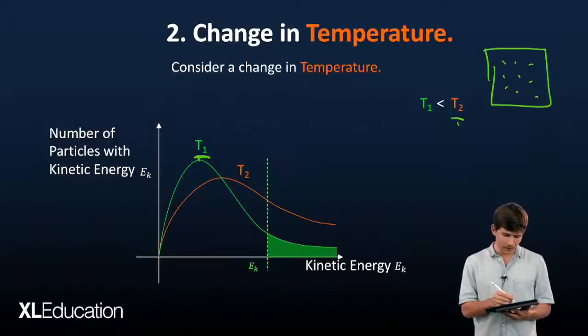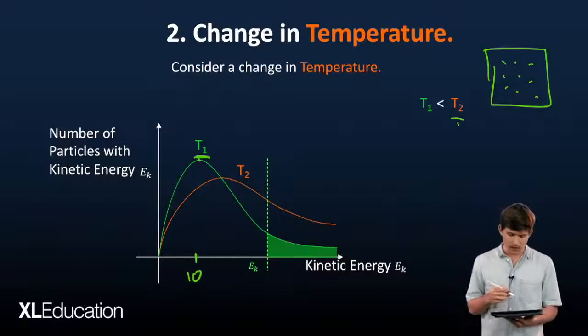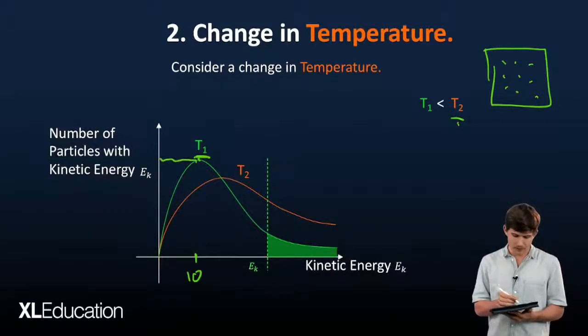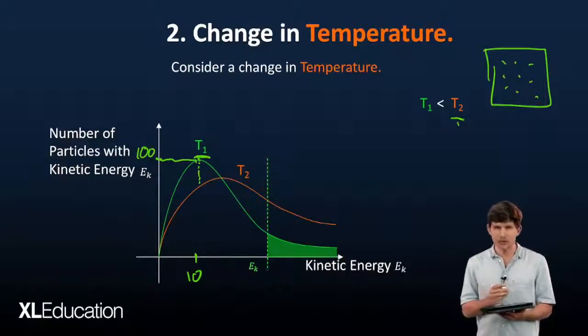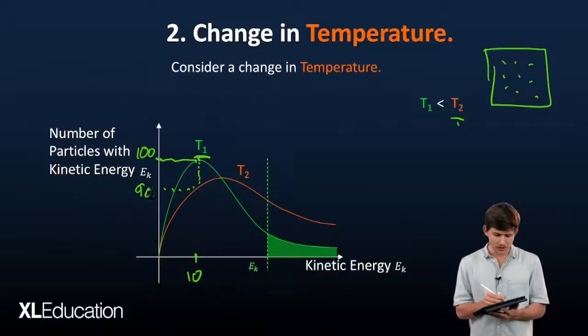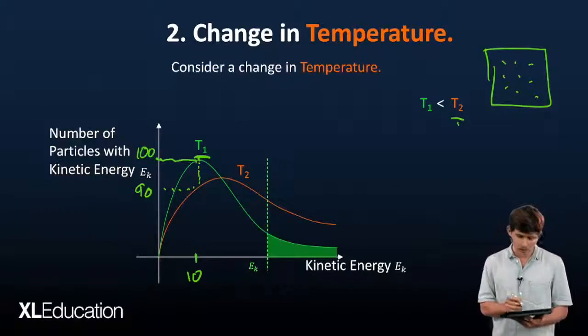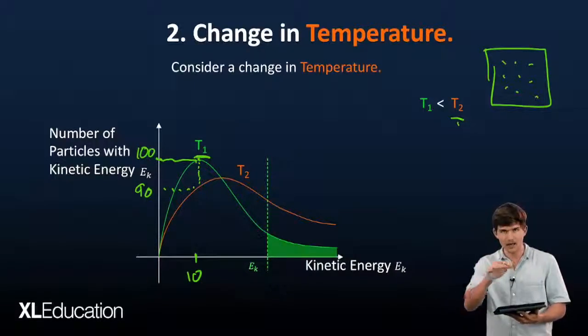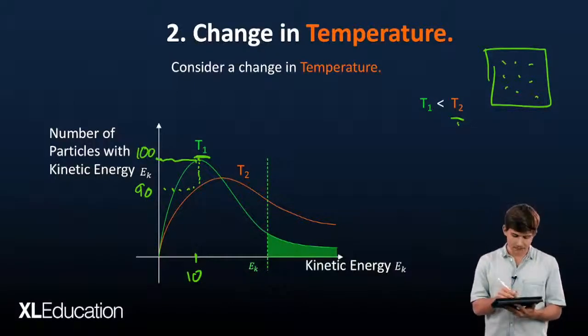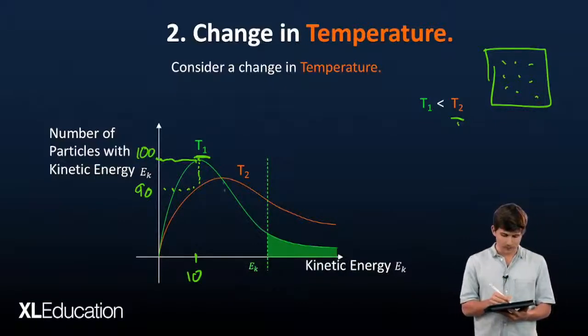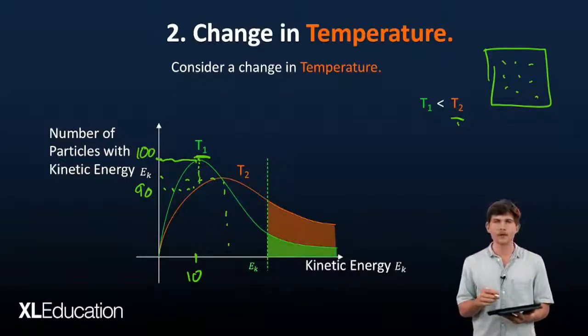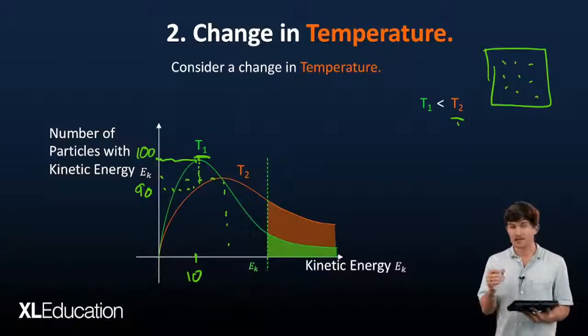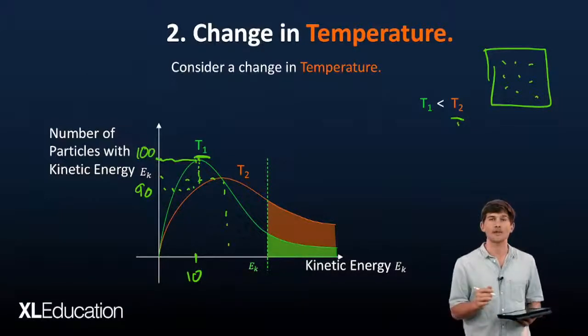T2 represents what will happen in terms of the distribution of particles. What does this mean? At 10 units of energy, we started with 100 particles. At T2, there are now fewer. The curve of T2 went down a little bit and to the right. The maximal point is now shifted. Most interestingly, the number of particles with sufficient energy for an effective collision has doubled or even tripled, depending on how much the temperature increased.